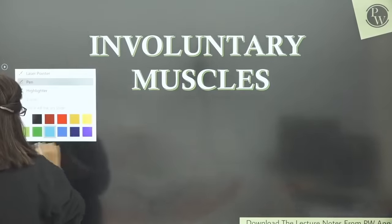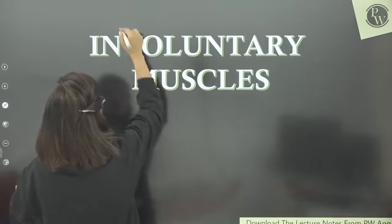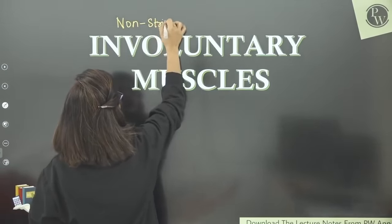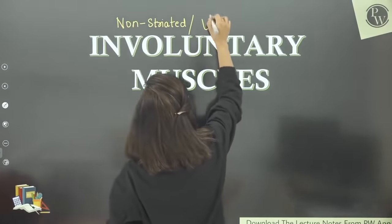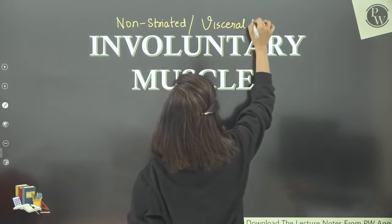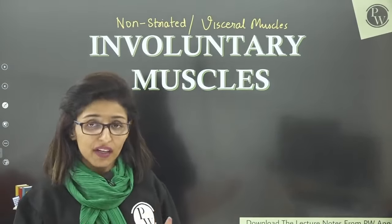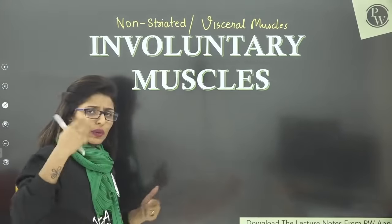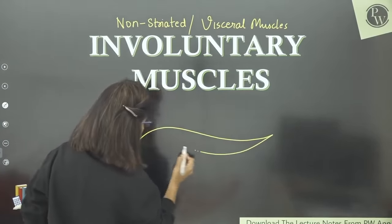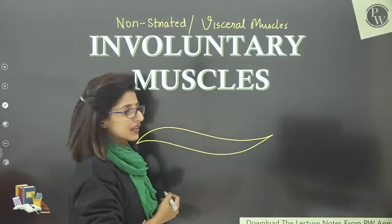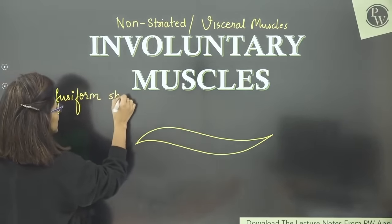The other two muscle types — involuntary and cardiac muscles — we will now compare and study together. Involuntary muscles are not under your control, so we call them involuntary. They have no striations, so we also call them non-striated. They make up internal organs. Internal organs are called visceral organs, so we also call them visceral muscles.